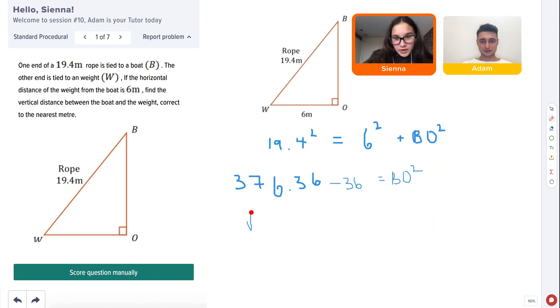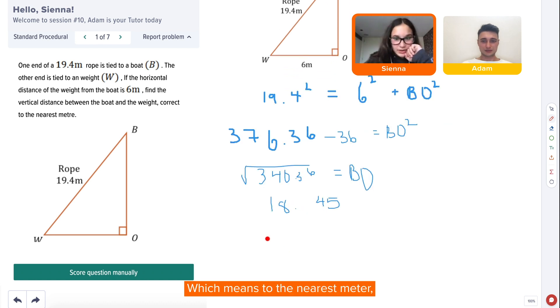Yep. That means root 340.36 equals e o. So approximately 18.45, which means to the nearest meter it would be 18.